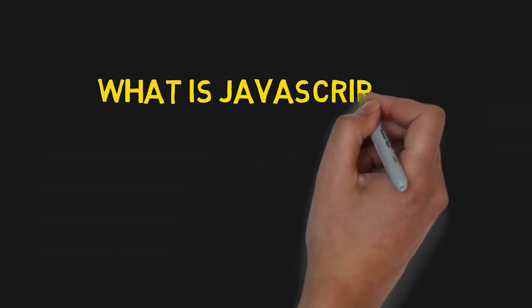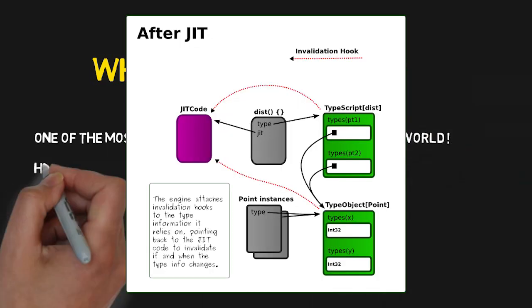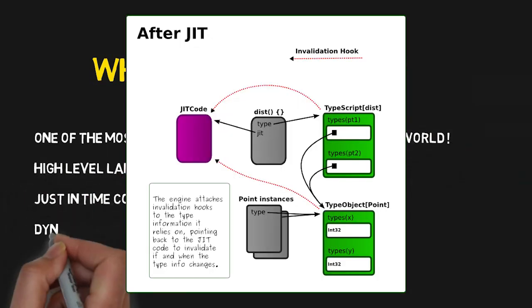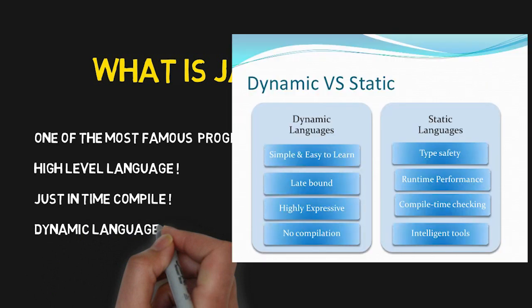JavaScript is one of the most famous languages in the world. It is a high-level language that uses a JIT (just-in-time) compiler, meaning it is interpreted at the time of execution. It is dynamic in nature — weakly typed. Unlike C or C++, where you must specify a data type for each variable and cannot change it, JavaScript is dynamically typed, so you can define a variable as a string and later change it to any other type.